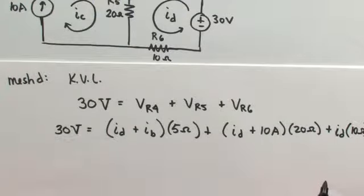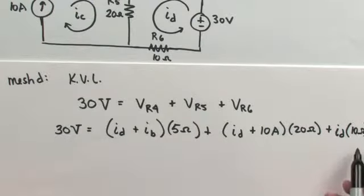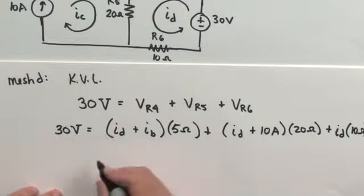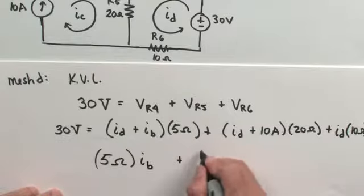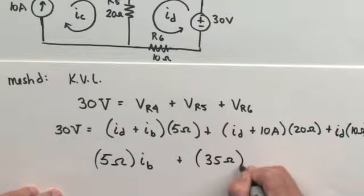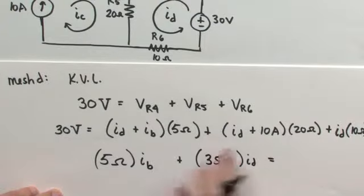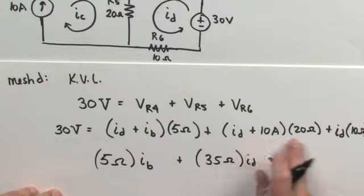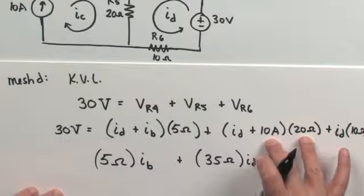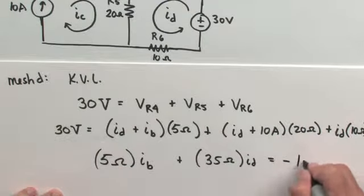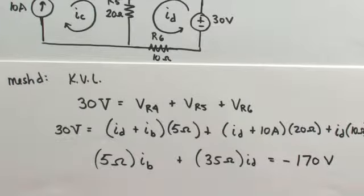Rearranging this equation into a form conducive for a matrix solution, after algebraic manipulation we get: 5 ohms × I sub B + 35 ohms × I sub D = −170 volts. That is one of the mesh current equations we need.